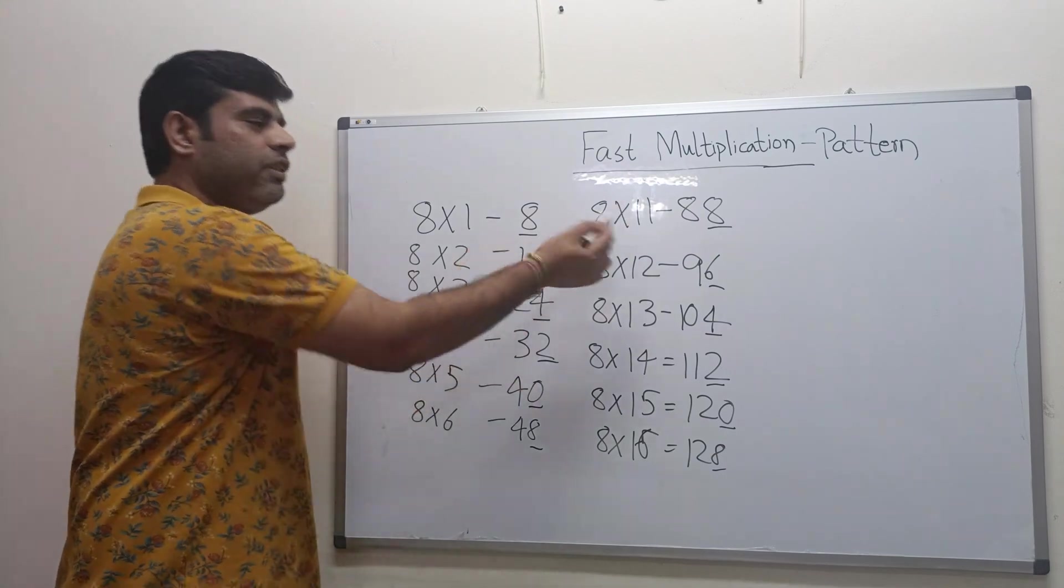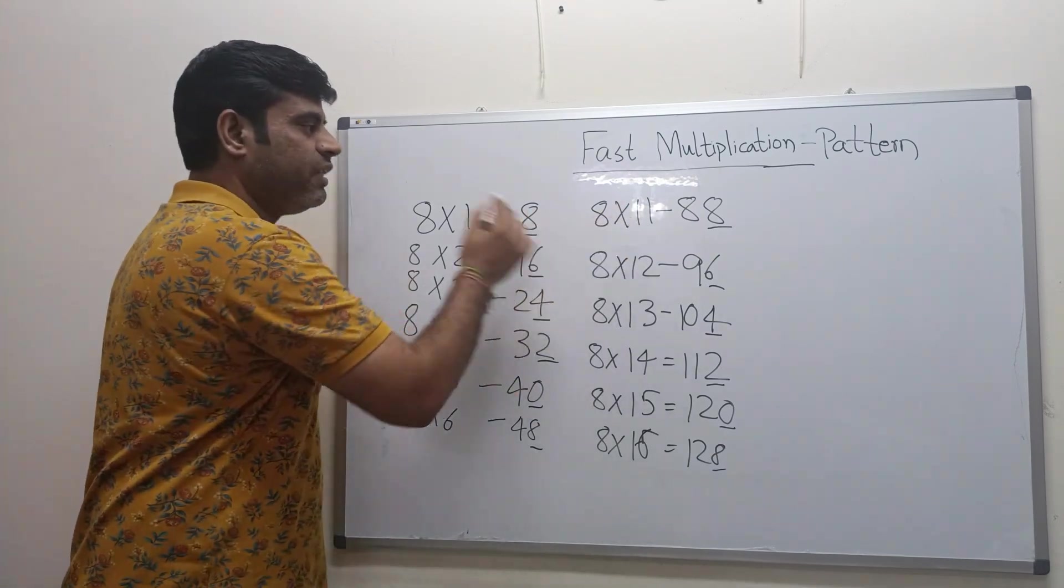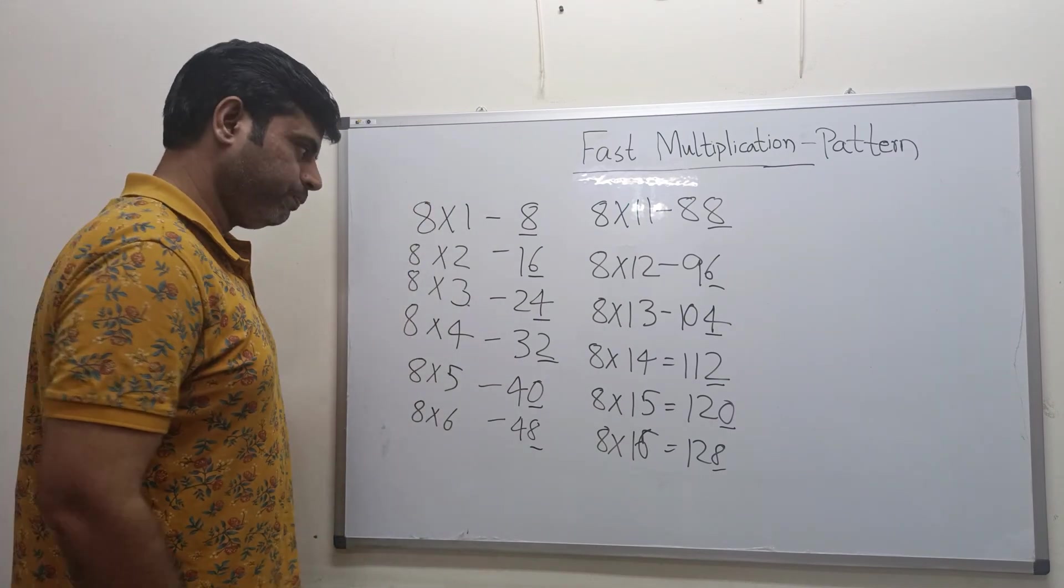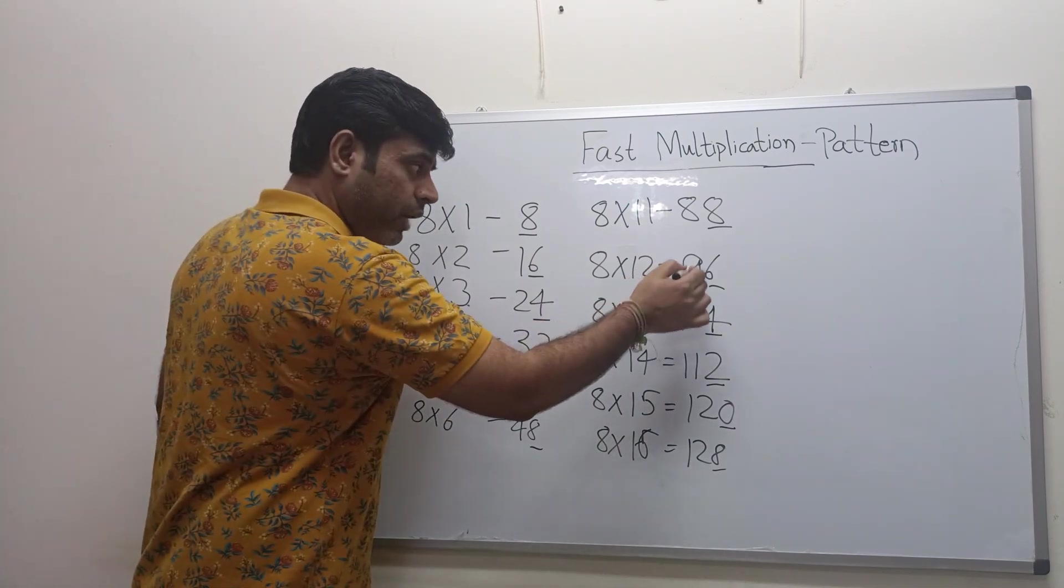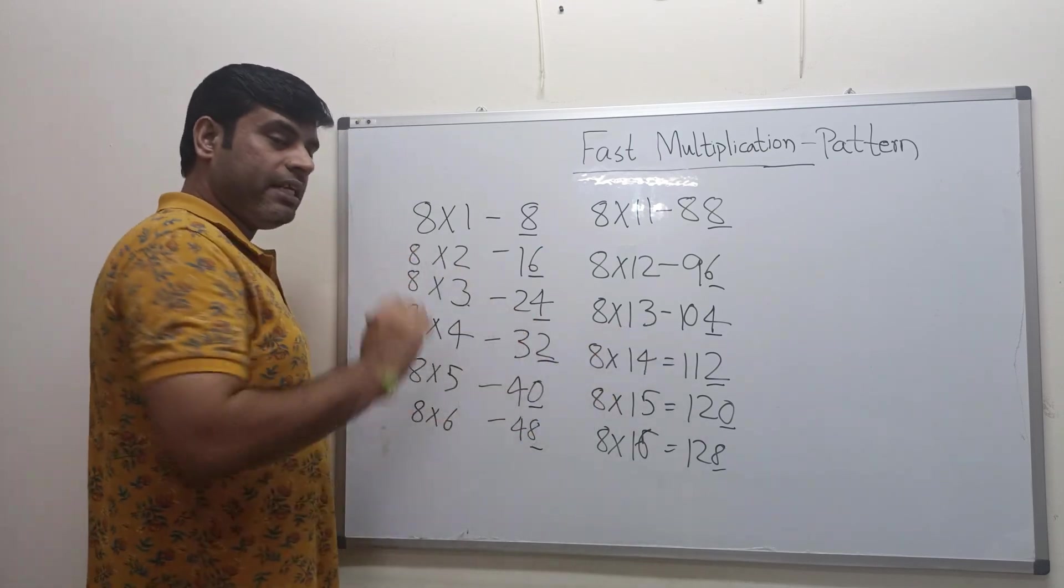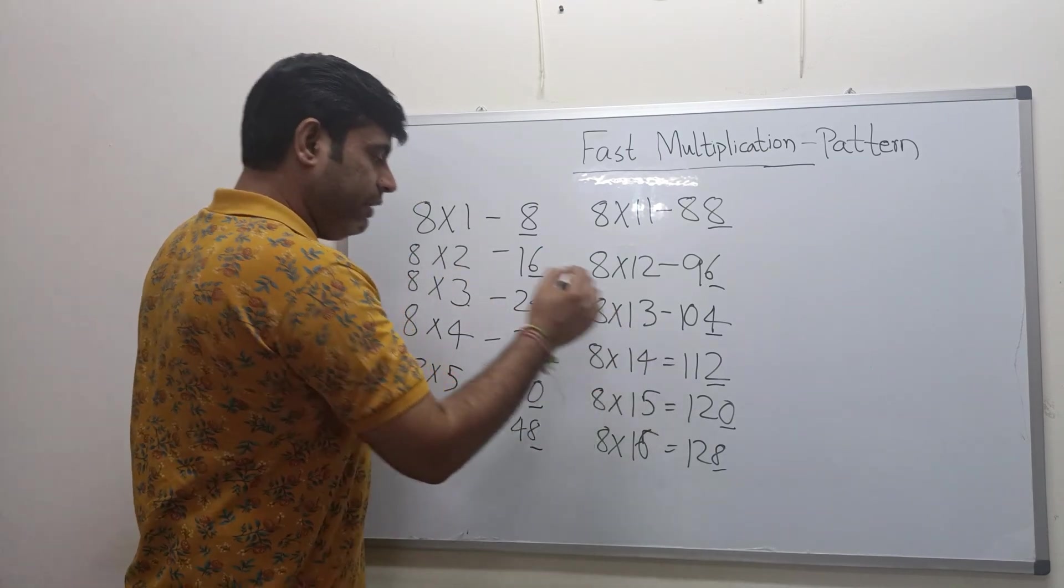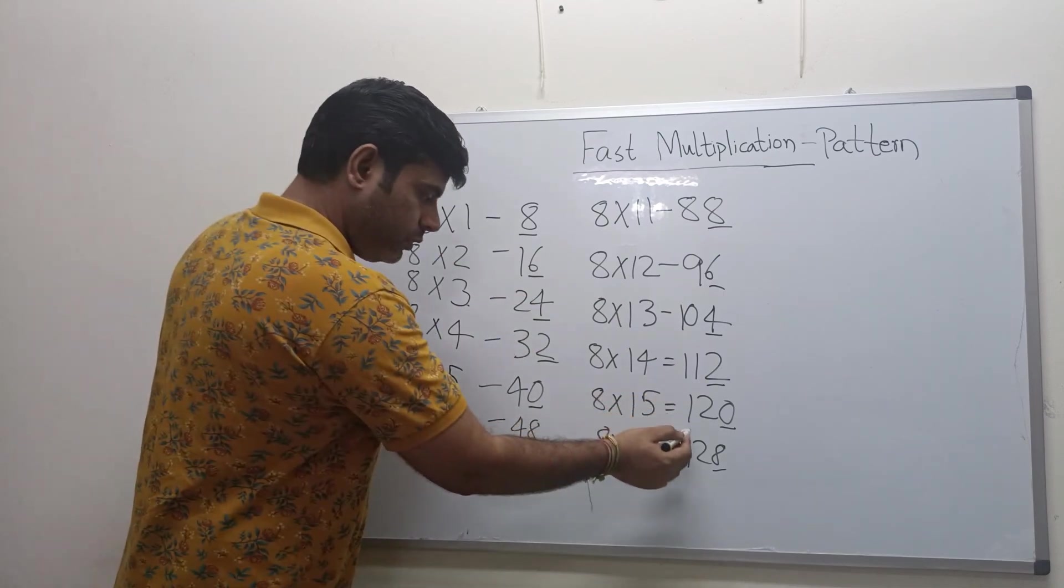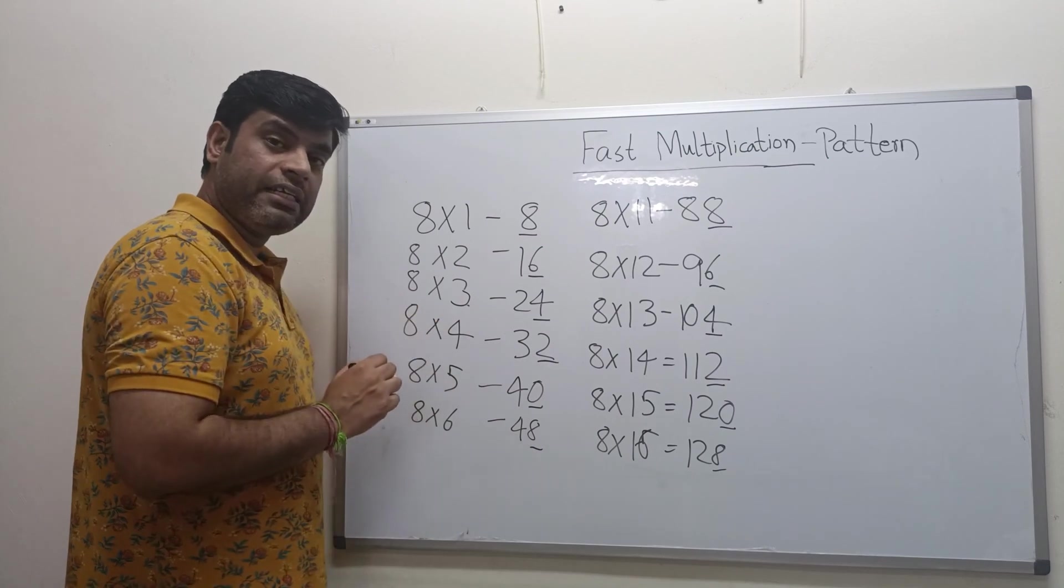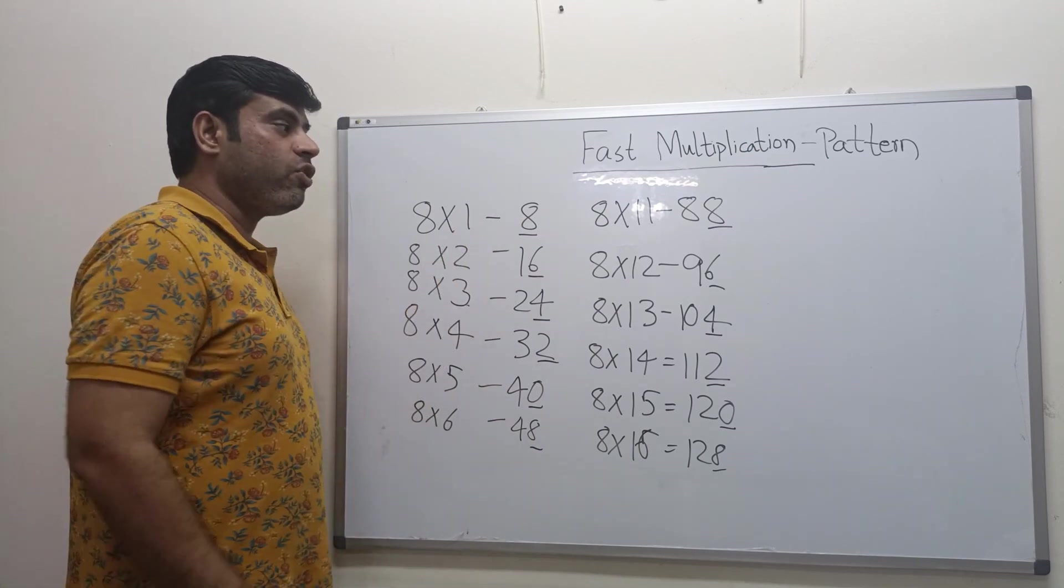Now what is the difference between these two? Actually difference is 80. Difference between these two, again 80. 96 minus 16 is 80, or you can simply do 9 tens minus 1 ten is 8 tens which is 80. 10 tens minus 2 tens is 80, then 11 tens minus 3 tens is 80, 12 tens minus 4 tens is 80. So everywhere there is a difference of 80.